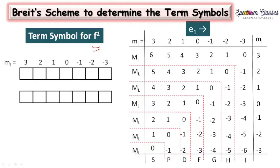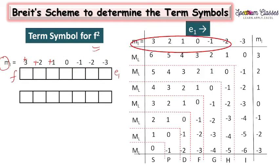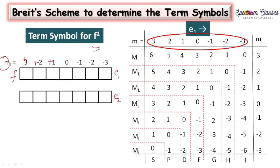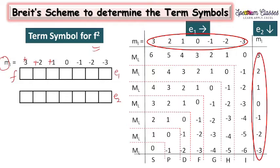For the f orbital, the ml values are: +3, +2, +1, 0, -1, -2, and -3. These are the ml values for electron number 1, and we are going to place these in a row. Similarly, we are also having ml values for electron number 2 and we are going to place these in a column. In this way we are going to formulate this table — it may seem difficult but once we start you will find it very easy.